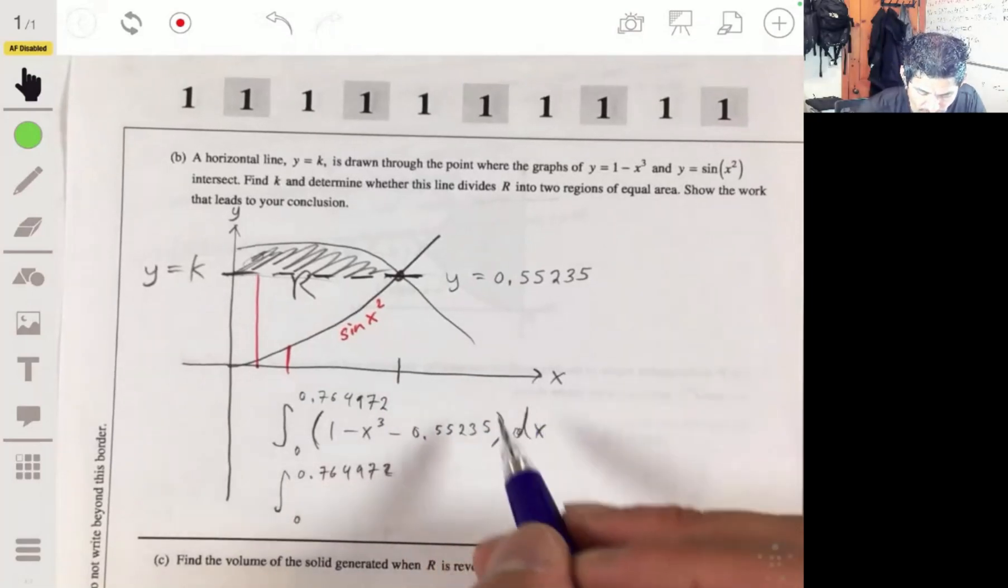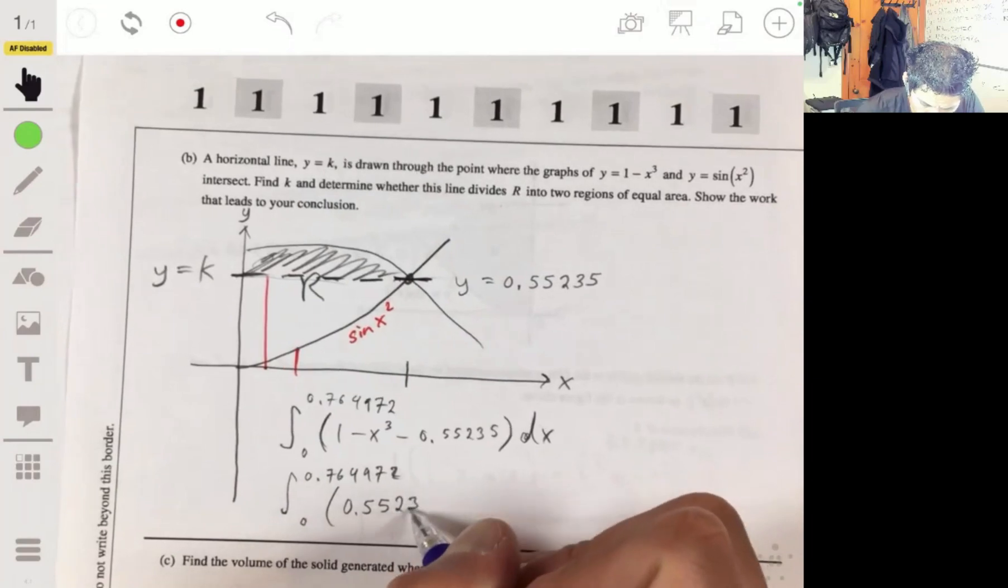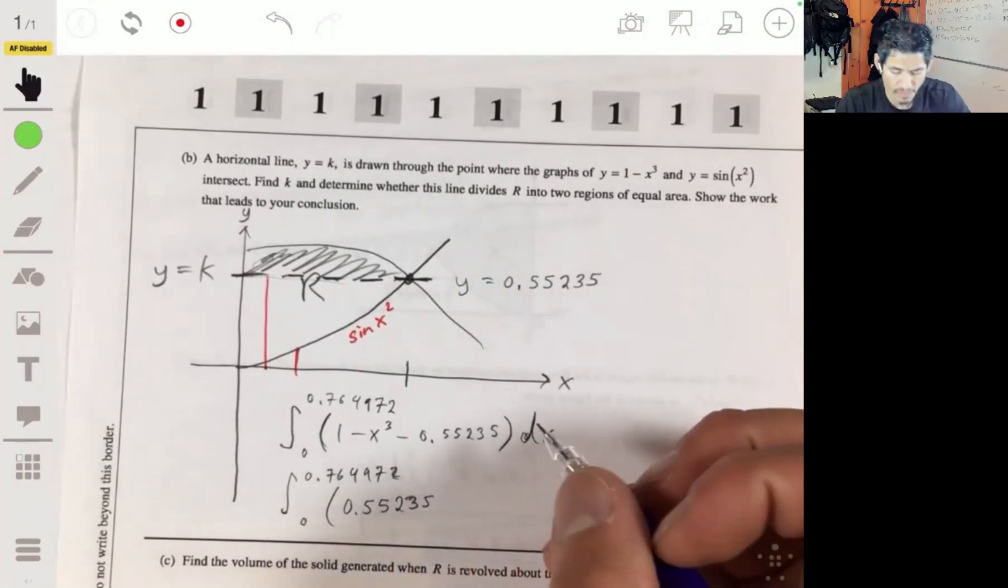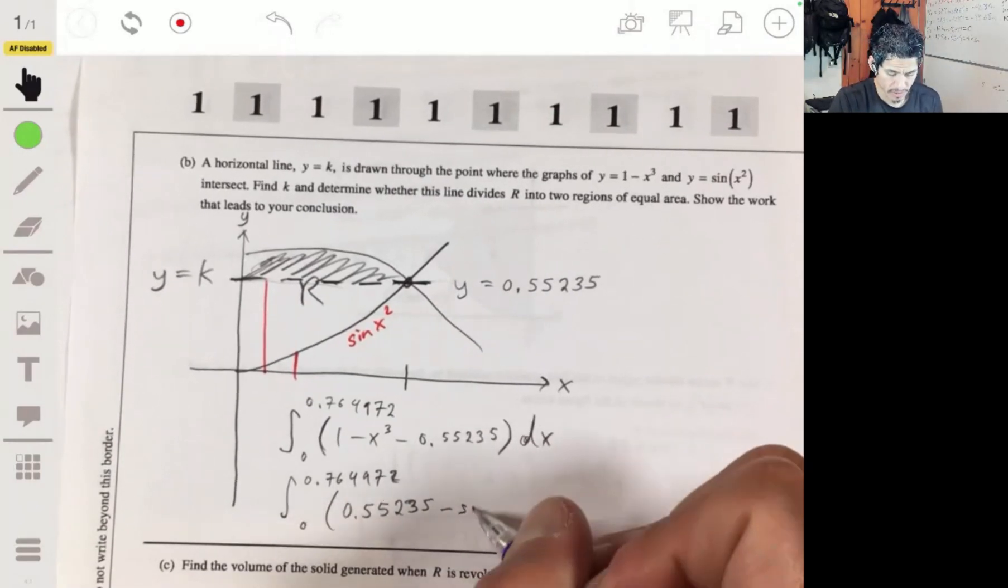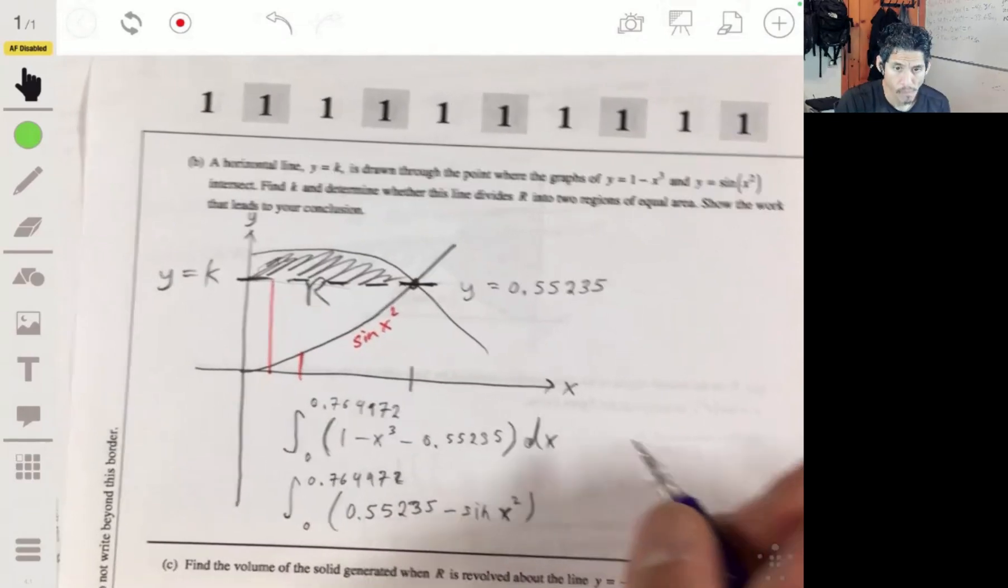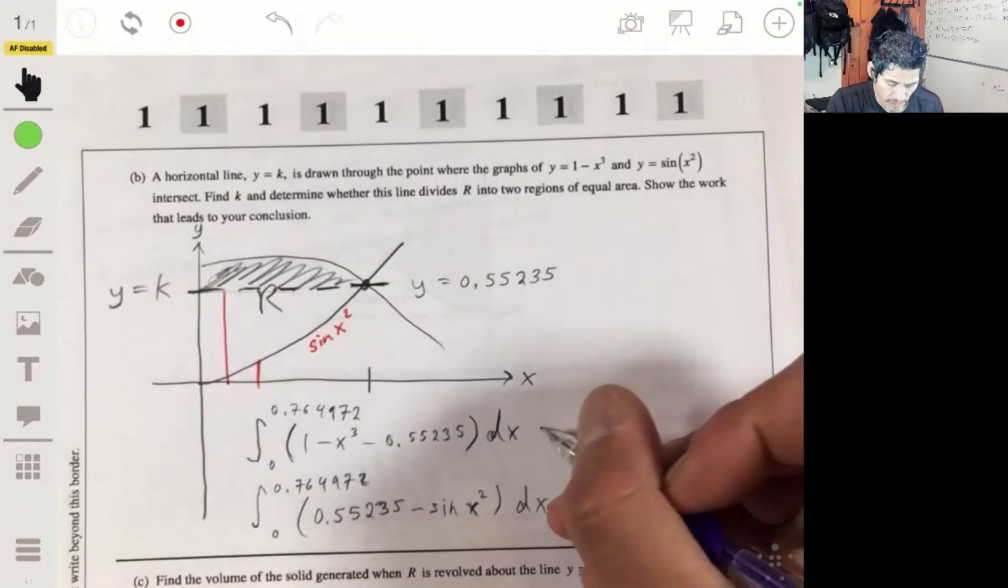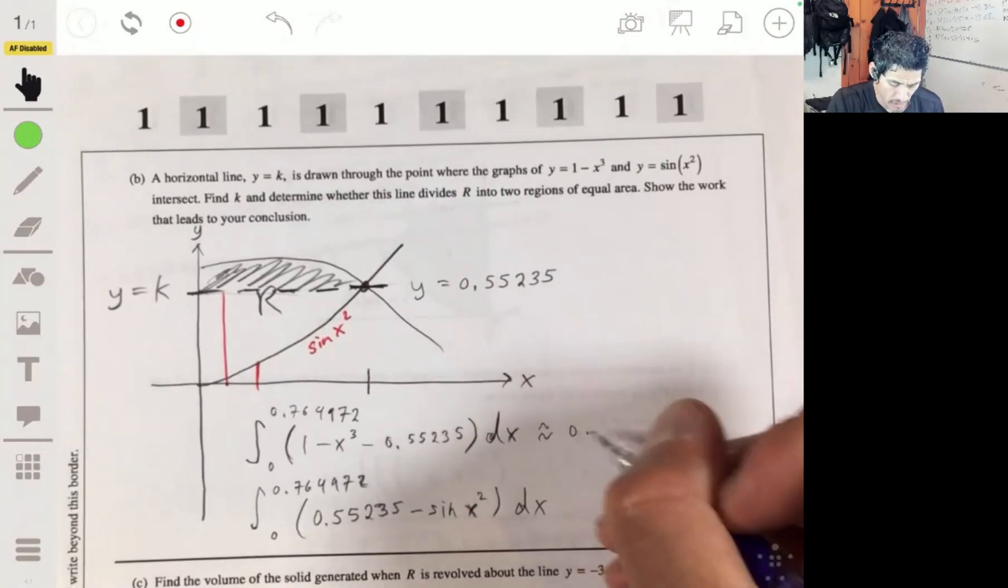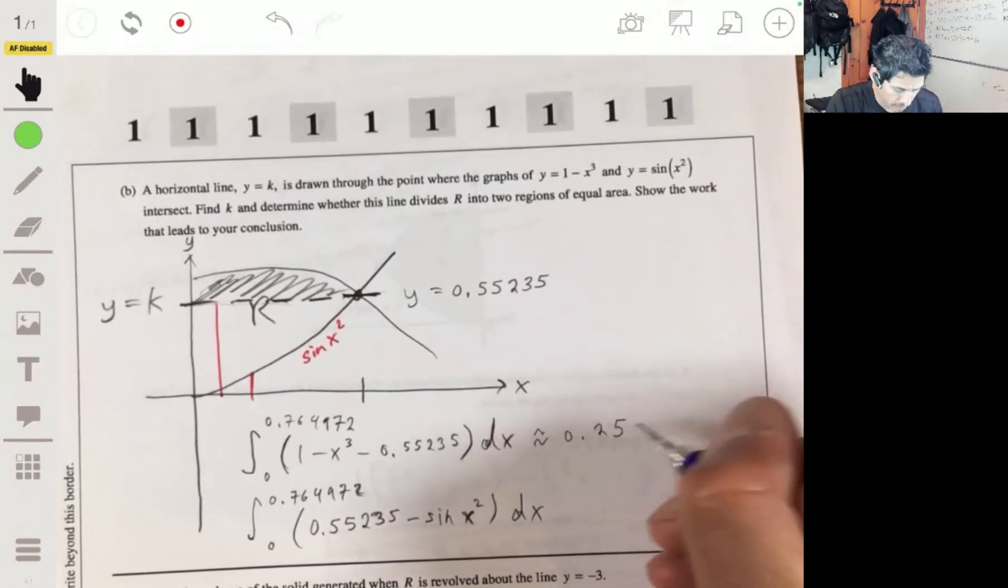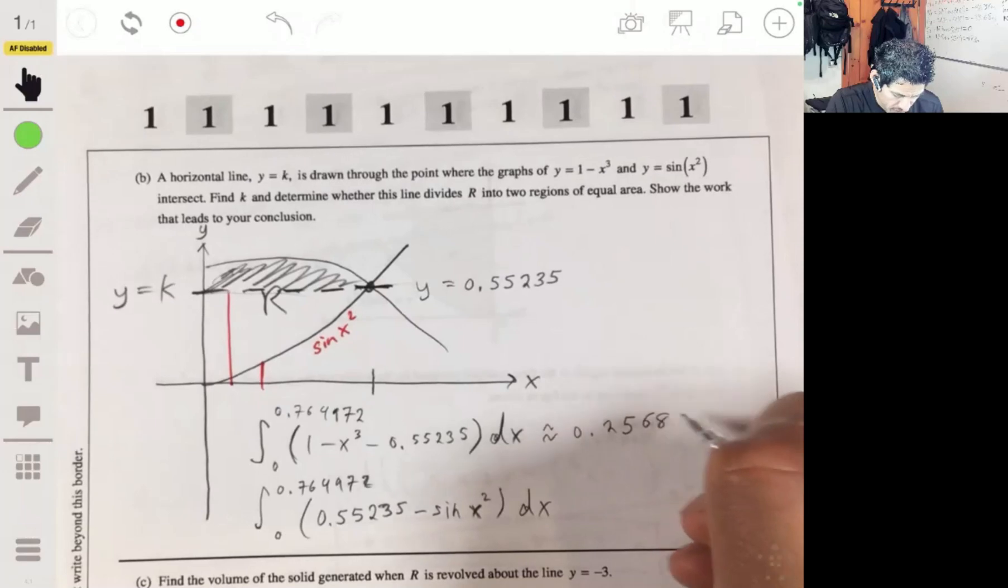So we'll set it up like this. 0.55235 minus the sine of x squared. And we'll get, for this, we'll get about 0.2, I got 0.256, 0.25682.